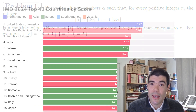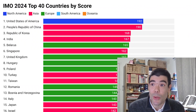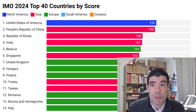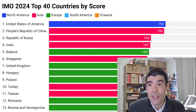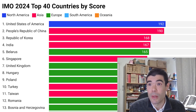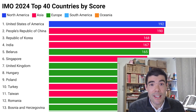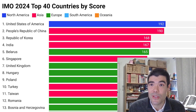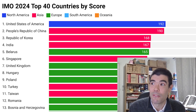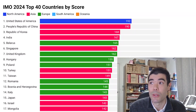Before we get into it, well done USA for coming first place this year, second place China, third place Korea, fourth place India — fantastic result — and fifth place Belarus, also a huge improvement from that team.